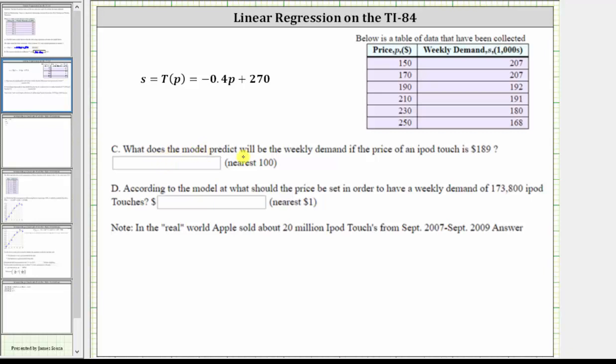For part C, what does the model predict will be the weekly demand if the price is $189. They're telling us the price P is equal to 189, and therefore to determine the weekly demand, we need to find T of 189.